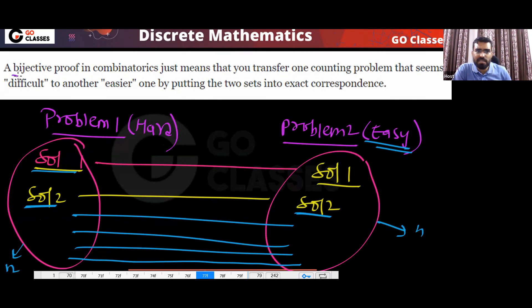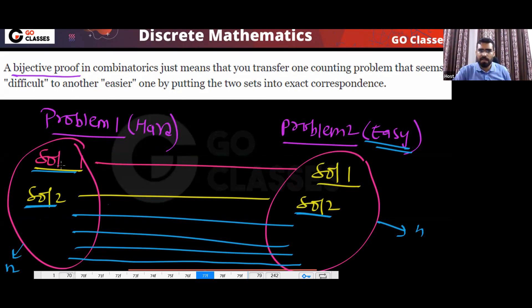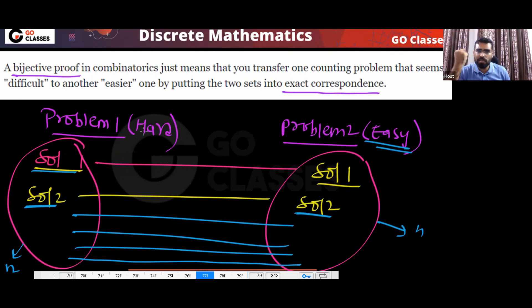Yes or no? If you can create a bijection between the solutions of the hard problem and the solutions of the easy problem — such that each solution maps uniquely to the other — then the number of solutions of the hard problem will be the same as the number of solutions of the easy problem.